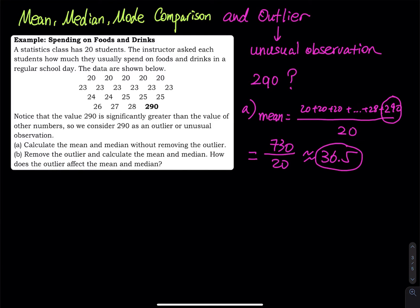The 290 is so big compared to everybody else, so that makes the sum really, really big. The sum is 730. It's supposed to be that big, it's big because of the 290. So how about the median? Since we have 20 numbers, the median is the average of the 10th and the 11th number.